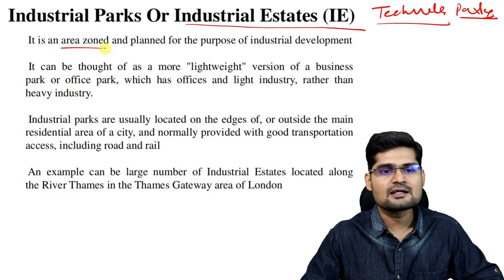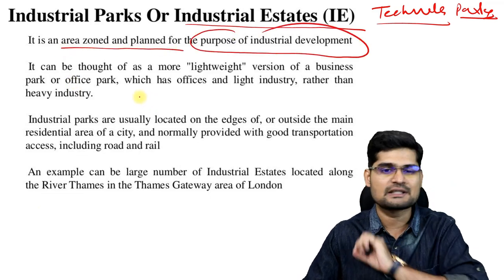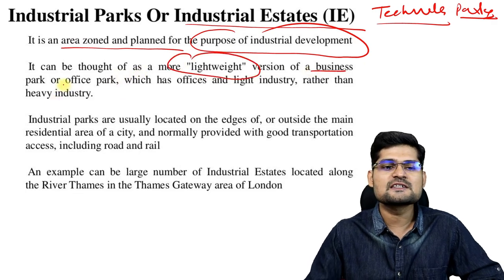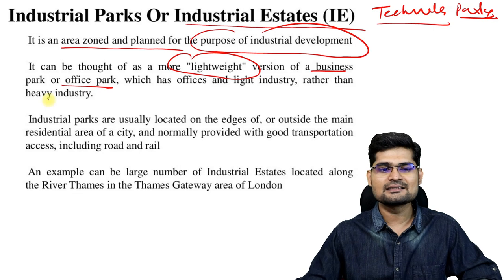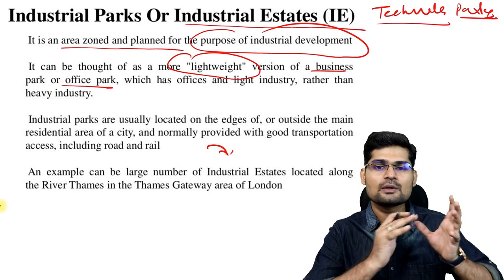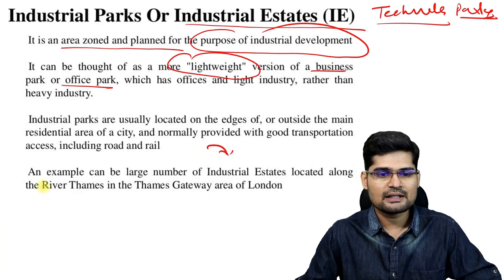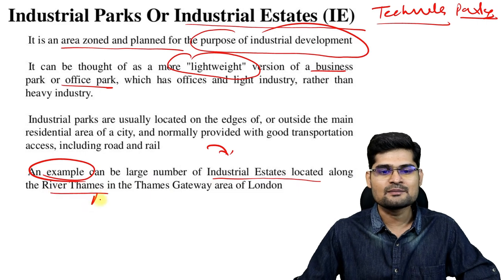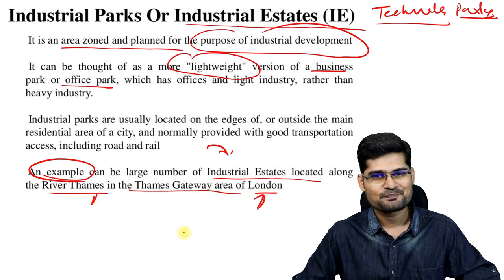Industrial parks or industrial estates are areas zoned and planned specifically for industrial development. They can be thought of as a more lightweight version of a business park or office park, where industrial goods are produced and exported. An example is the industrial estates located along the River Thames — the Thames Gateway area of London is very famous for this.